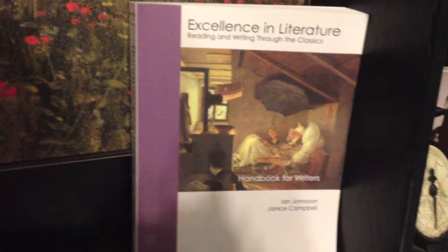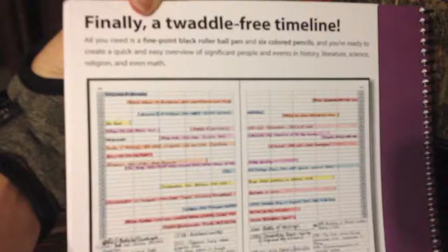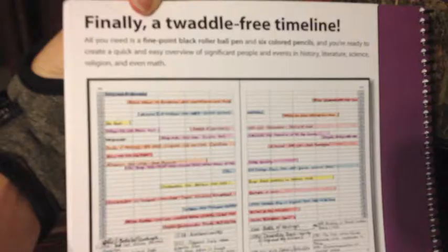Let me just show you one more thing. Here's the Excellence in Literature Handbook for Writers that we offer. The first half explains how to write an essay, construct an argument, and so forth. The second half is a style guide. The Time Frame Timeline is another resource — a blank timeline to help you organize the information you study with your students. All of those things are available from EverydayEducation.com. I'm Janice Campbell. Thank you for joining me and I hope you enjoyed the tour.